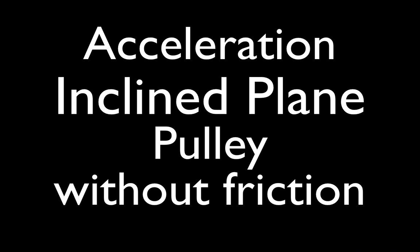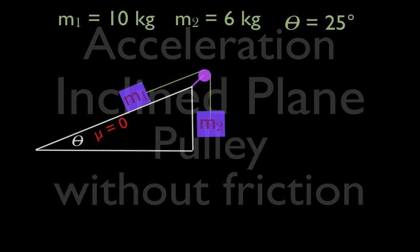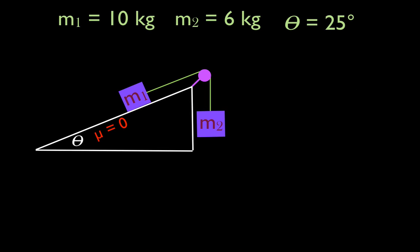In today's video, we're going to go over another problem involving acceleration, Newton's second law of the inclined plane, two objects, the pulley, and in this case there is no friction.